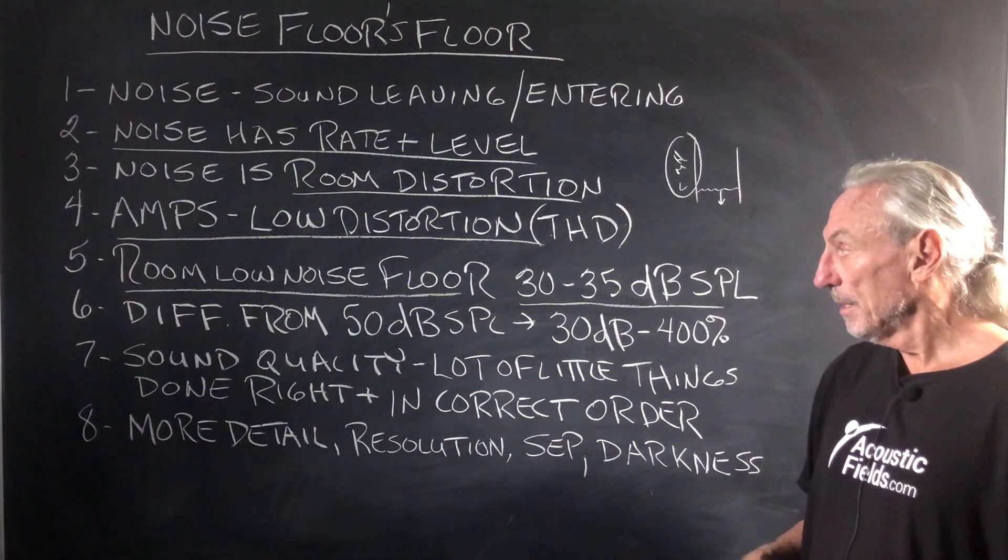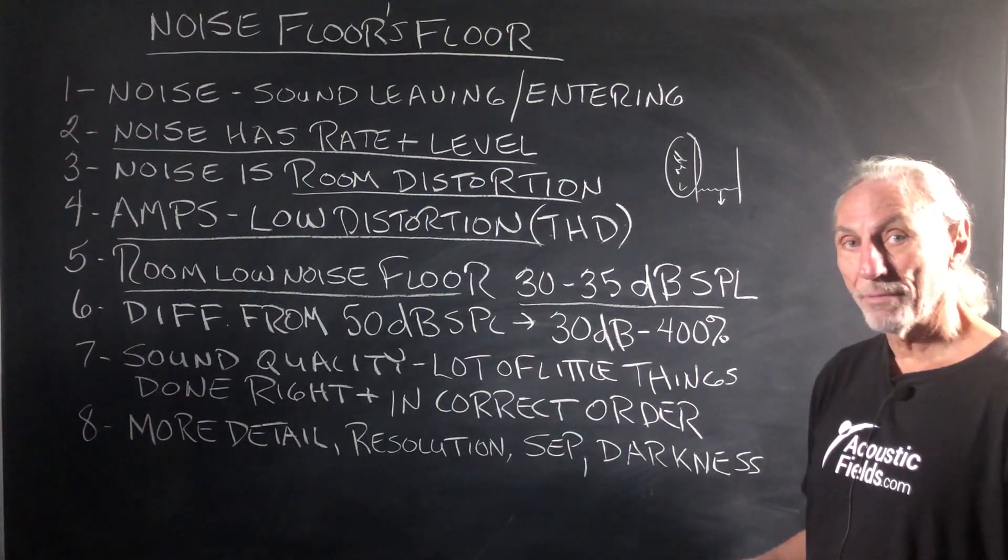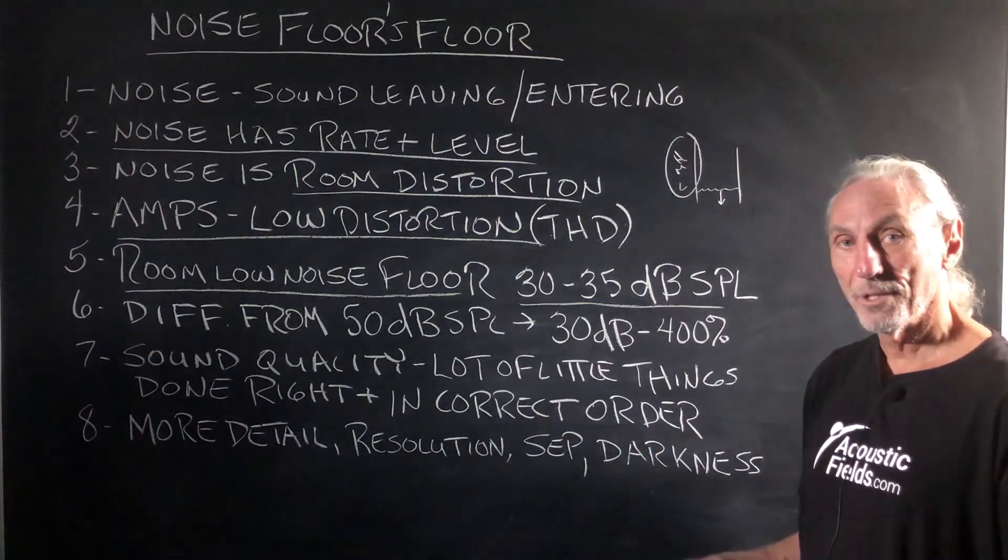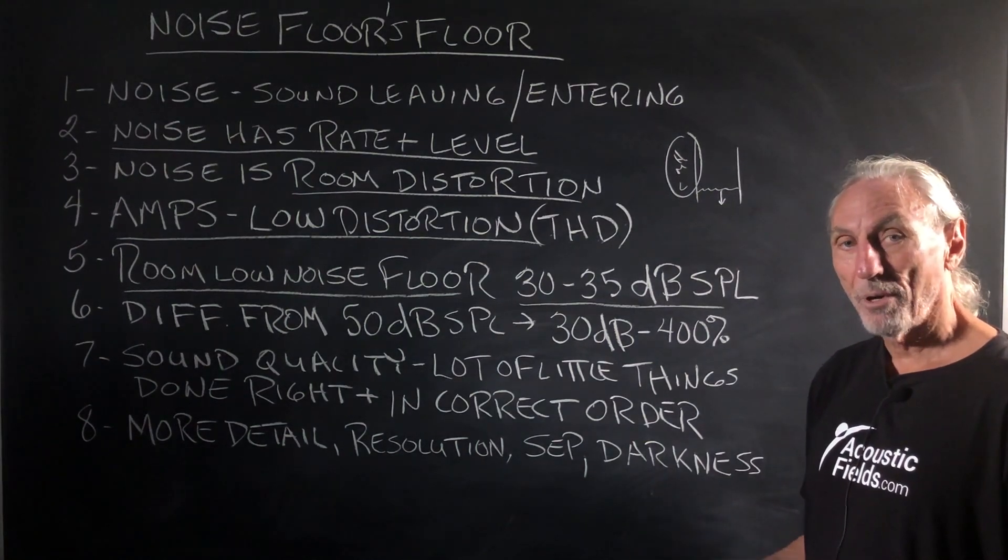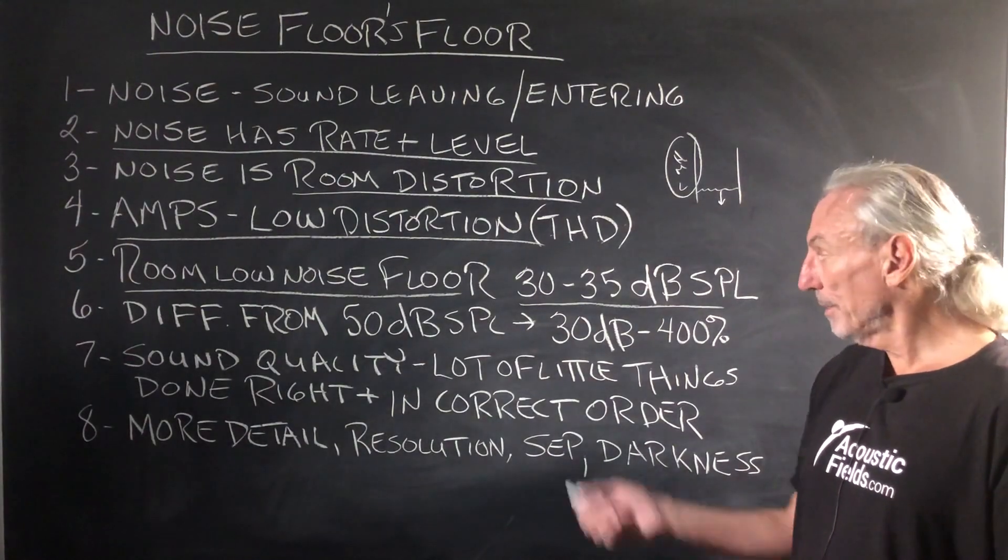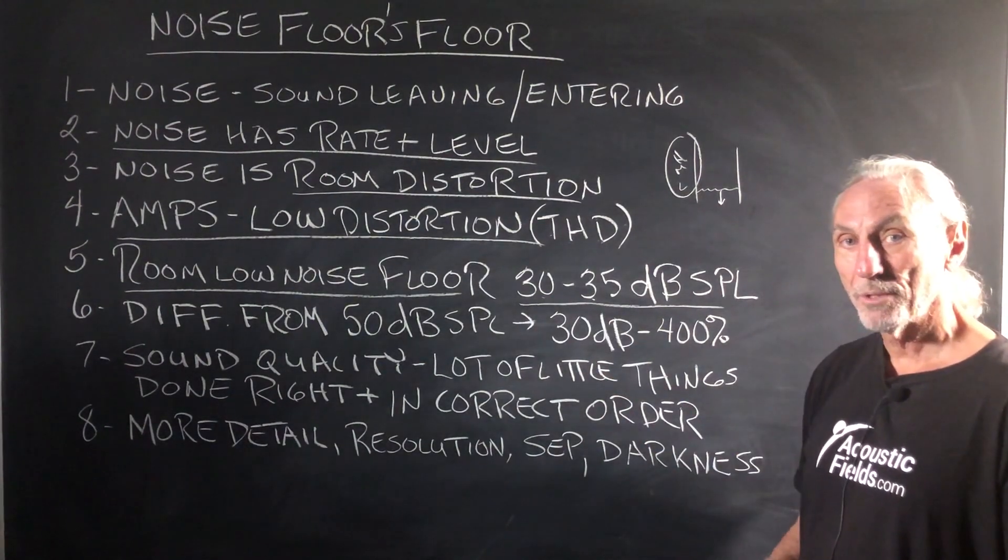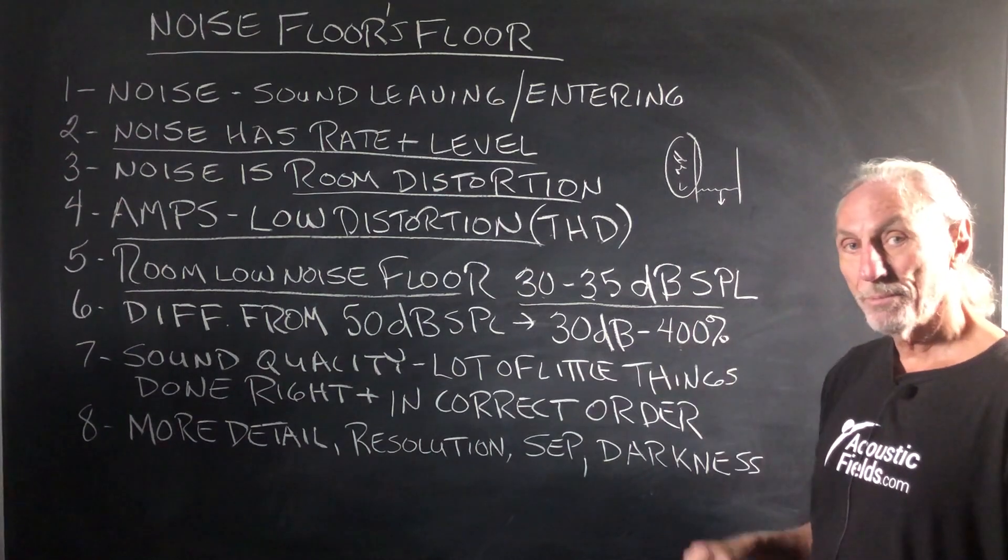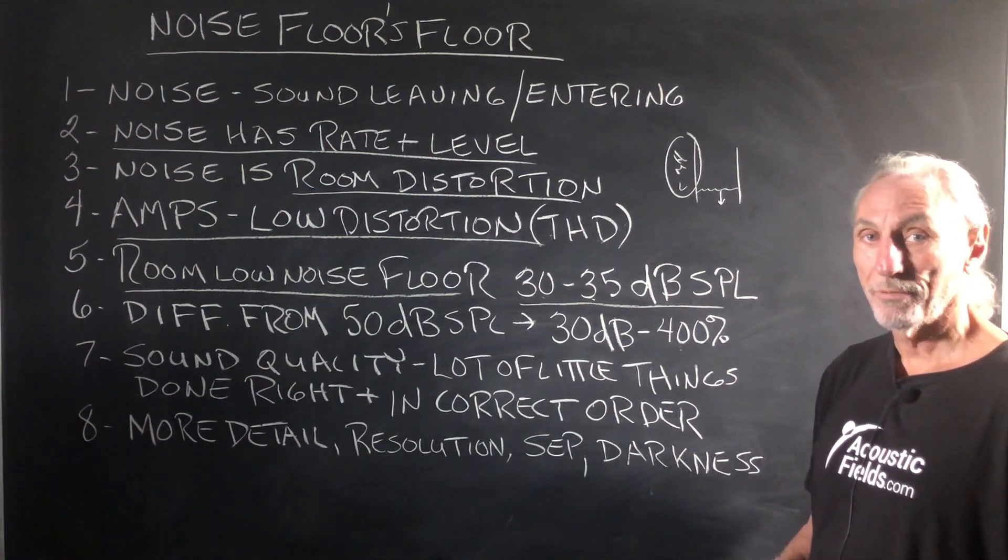Most rooms are 50, 55 standard - wood frame, drywall construction, noisy areas - 50, 55 right in there. Huge difference between 30, 35 - probably three, four hundred percent. You wouldn't believe what 5 dB difference makes in noise. You hear so much more.